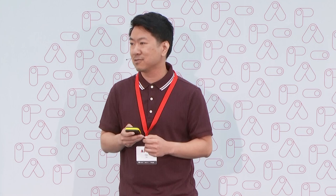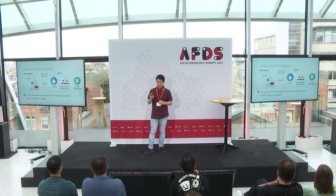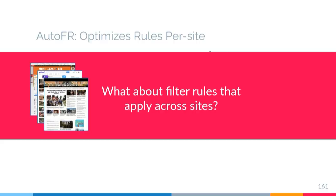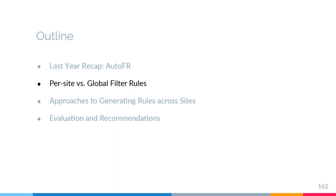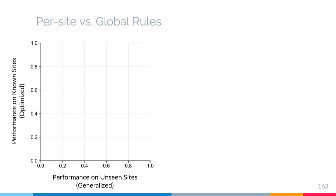Due to time constraints, please take a look at my last year's presentation and our paper. What I've shown is that AutoFR takes in a site and optimizes rules for that particular site. But what about filter rules that apply across multiple sites? To understand this problem, let me discuss the differences between per-site and global rules using this plot.